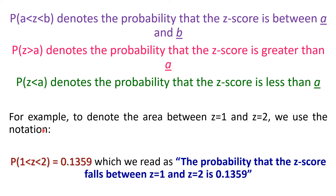For example, to denote the area between z equals 1 and z equals 2, we use the notation P(1 < z < 2), which equals 0.1359. This is read as: the probability that the z-score falls between z equals 1 and z equals 2 is 0.1359. That is how we read this notation.